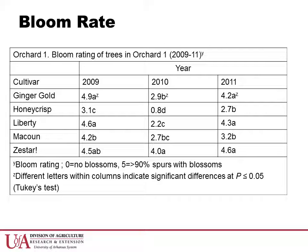Looking at this data, we can see that Ginger Gold, Liberty, and McCowan had very good bloom ratings in 2009 and 2011, although all three appeared to be depressed in 2010. Zestar was less affected in 2010 by the lack of hand thinning, and therefore the bloom rating has been consistently good across all three years. Honeycrisp, on the other hand, has consistently had the lowest bloom rating of all five cultivars in the orchard.